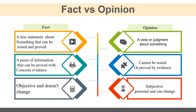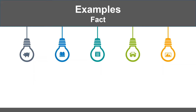Let us move to some examples from your field of study in dental work to put our hands on the differentiation between facts and opinion. Example number one: a normal adult mouth has 32 teeth. This is a real fact — you can prove and test this information to obtain strong evidence.